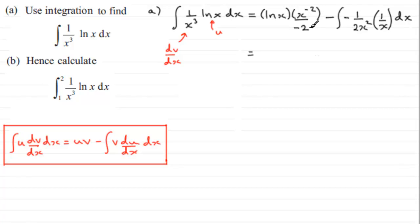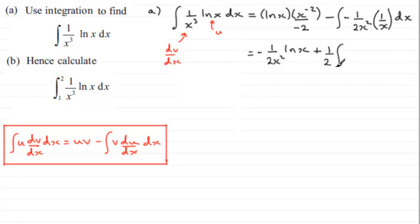Tidying this up: writing x to the minus 2 over minus 2 as minus 1 over 2x squared, we get minus 1 over 2x squared multiplied by the natural log of x. The minus minus becomes plus, and we can bring the half out front of the integral, leaving 1 over x cubed integrated with respect to x.